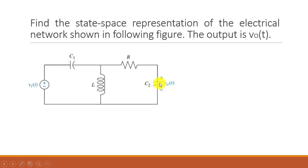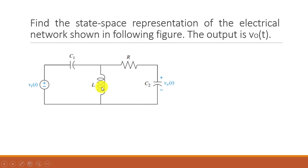When you see a circuit or any diagram that has to be represented in state space form, the very first thing you have to identify is the state space variables. Identifying the components here which can be represented in the form of derivatives: there are three — capacitor C1, inductor L, and capacitor C2. So we have two capacitors and one inductor — three energy storage elements.